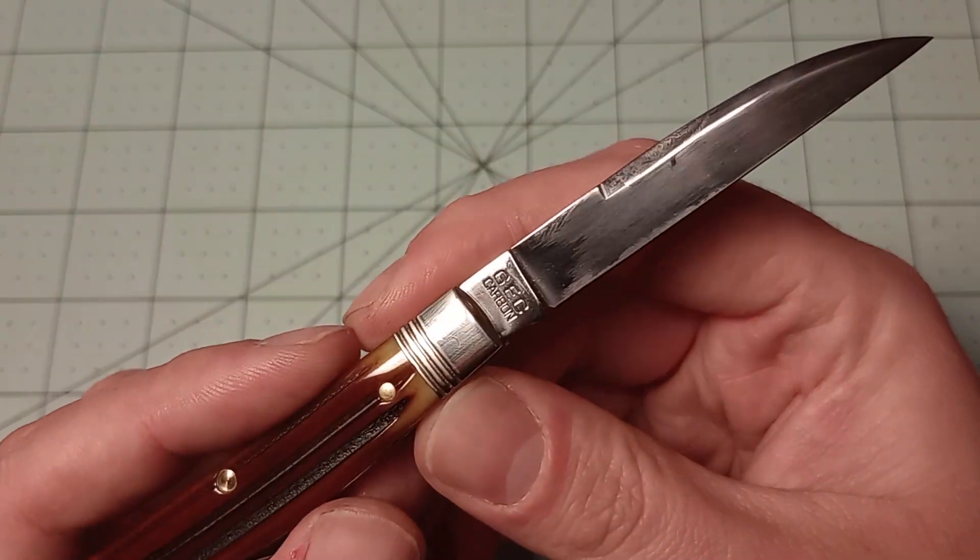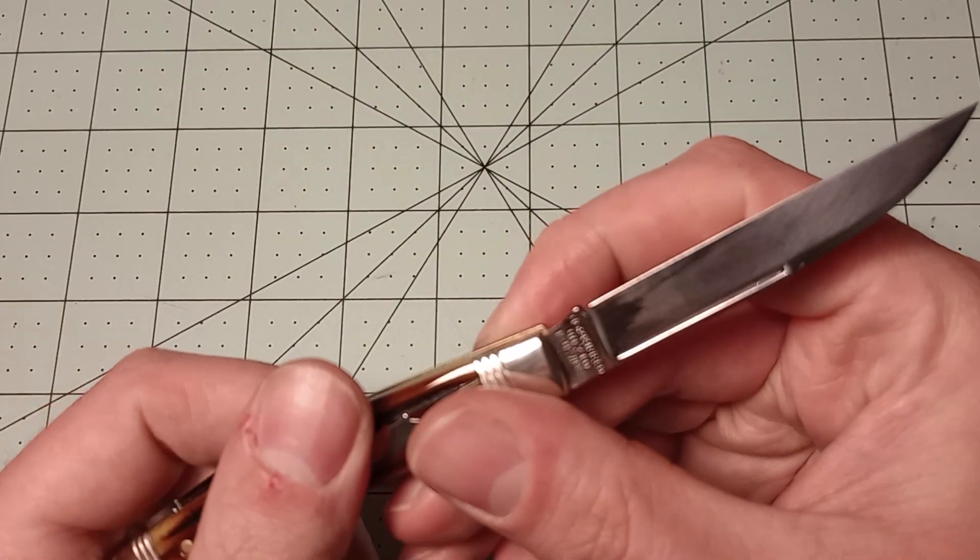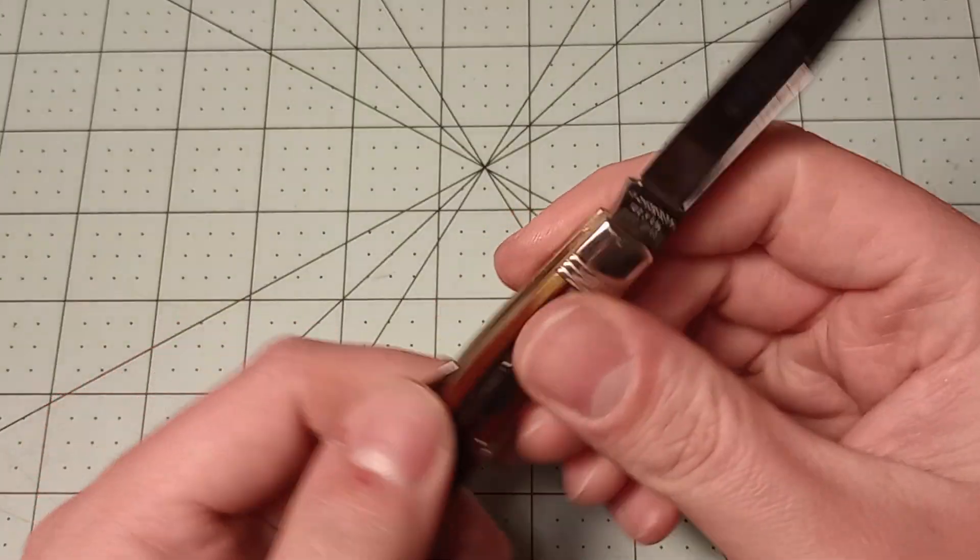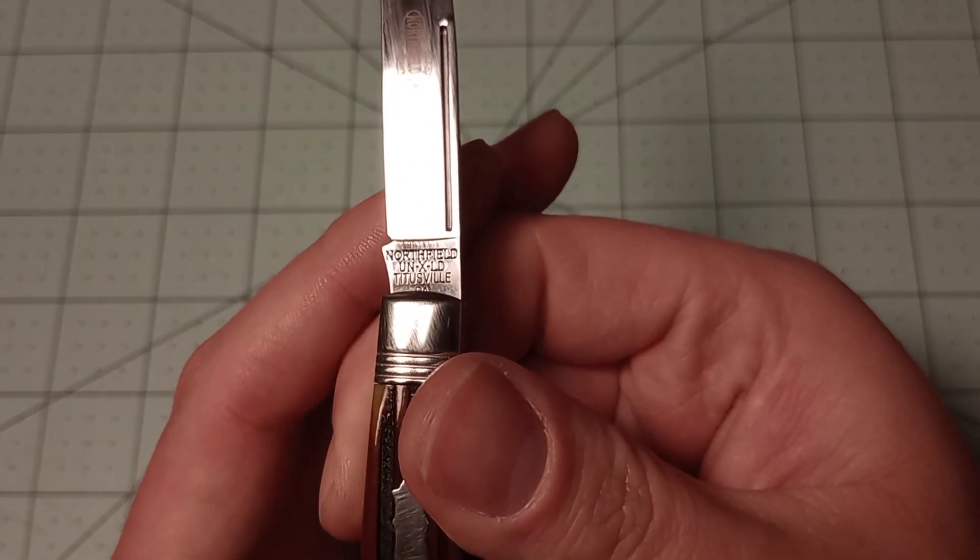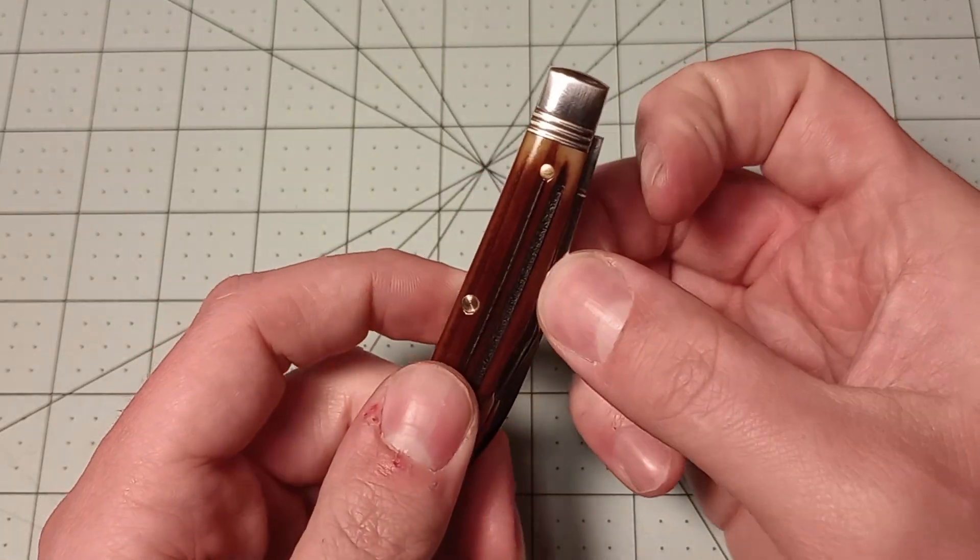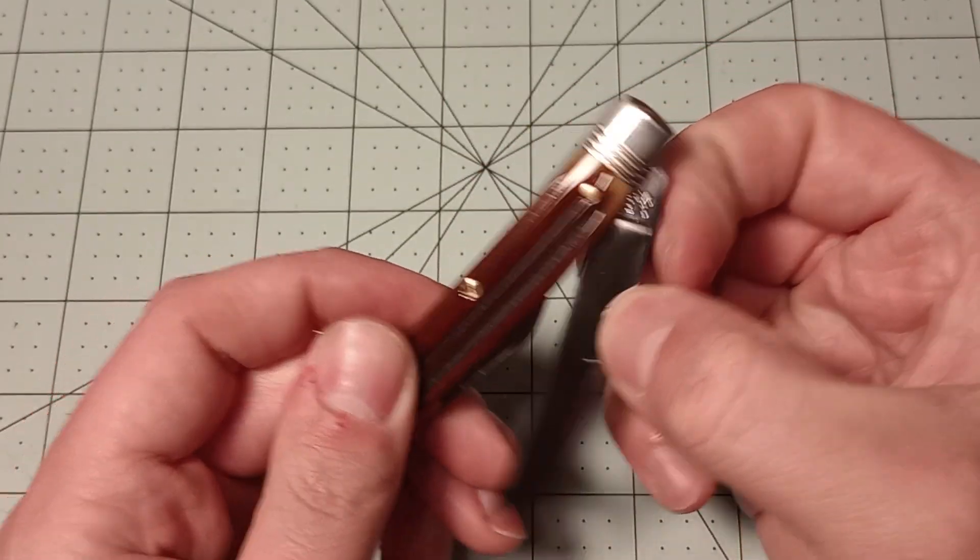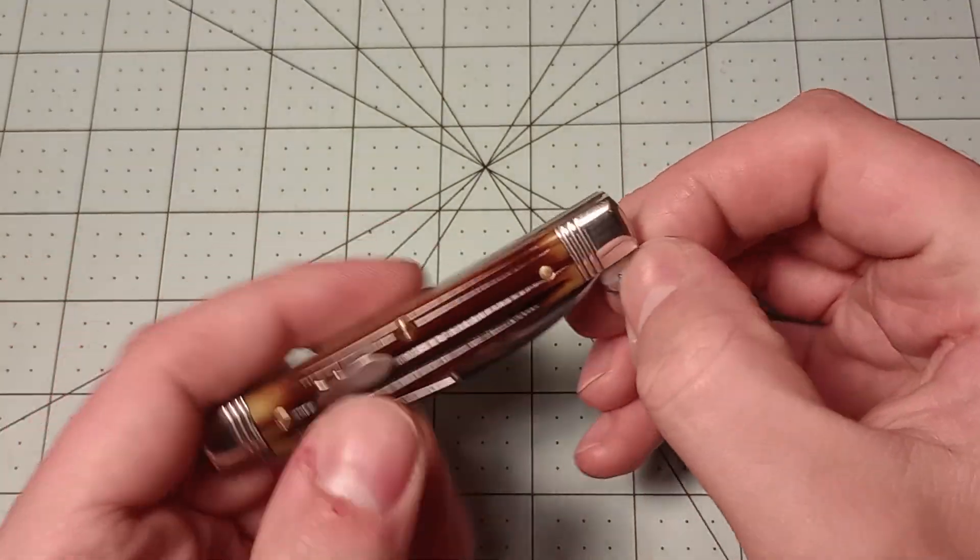What you can see there. GEC, Great Eastern Cutlery Carbon. And here's the tank stamp for the Northfield. Northfield Unexcelled Titusville PA. And I think the model number. No, the model number is not on that one. Oh, that's interesting.